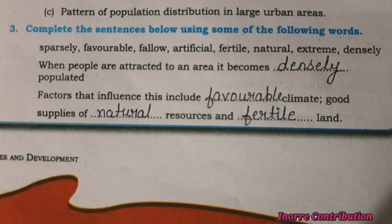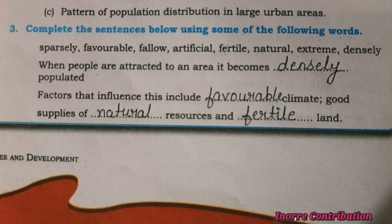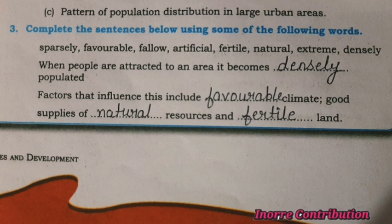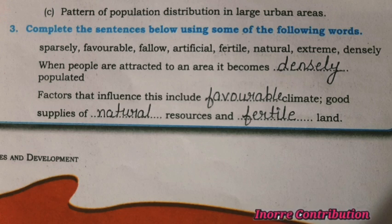Question 3: complete the sentences below using some of the following words. When people are attracted to an area, it becomes densely populated. Factors that influence this include favorable climate and good supply of natural resources and fertile land.